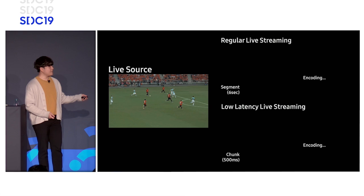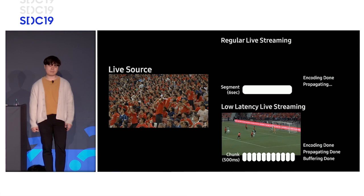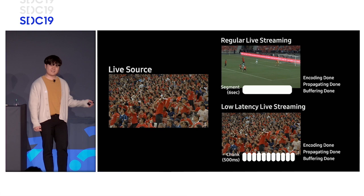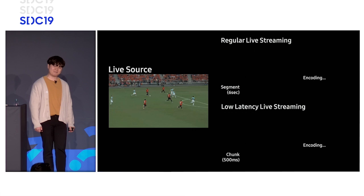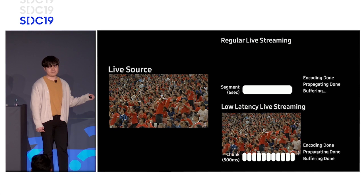On the left side there is a live source. On top is regular live streaming, and the bottom shows low-latency live streaming. Please compare the time spent in encoding, buffering, and propagation between them. You can see the first frame on low-latency live streaming, but on regular streaming it's still buffering. Finally, you can see the first frame on regular live streaming. That difference is the latency.